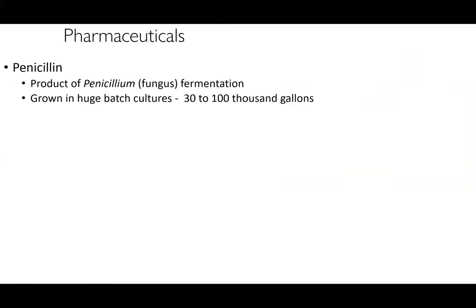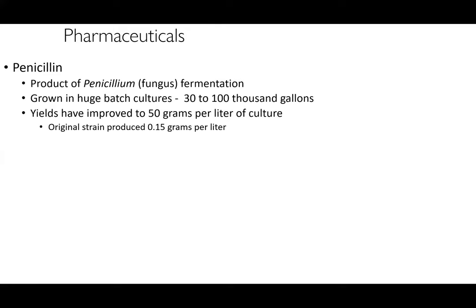Next up are pharmaceuticals. The very first instance of using microorganisms to produce pharmaceuticals was for penicillin — a byproduct of the fungus Penicillium. Penicillium is interesting because they're soil microbes, but also responsible for fermentation processes on cheese like Camembert or Brie. They would grow huge batch cultures of 30,000 to 100,000 gallons of this fungus and extract penicillin. Original yields started at about 0.15 grams per liter; we've now improved yields to about 50 grams per liter — a pretty dramatic improvement.